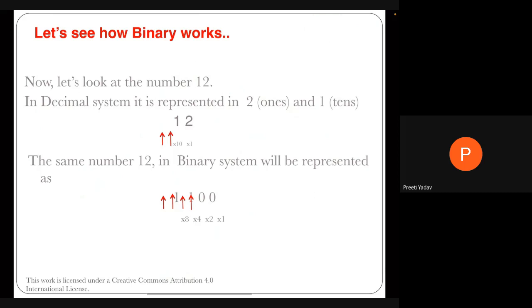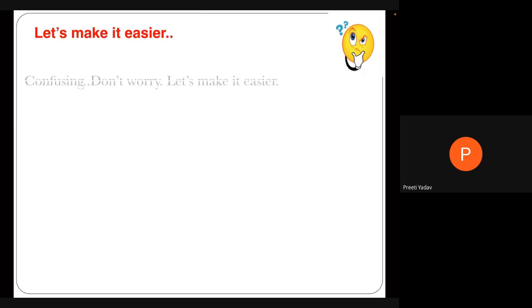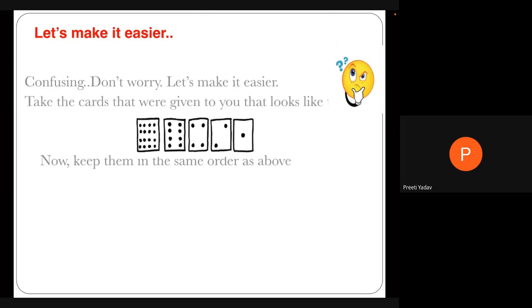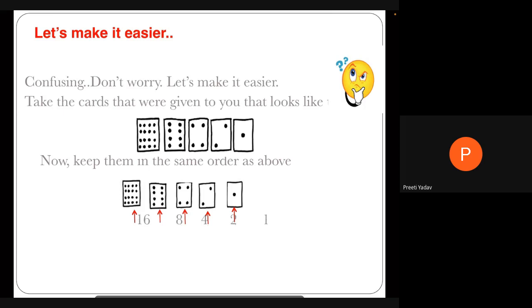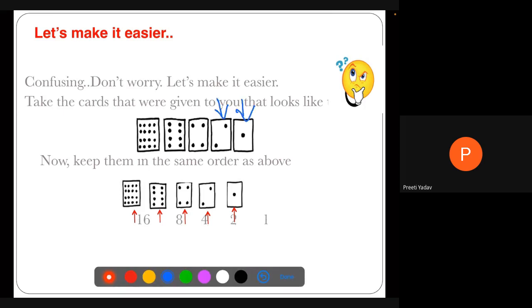We can verify: for 12 in binary (1100), we take 1×8 + 1×4 + 0×2 + 0×1 = 8 + 4 = 12. This confirms the method. Another way to understand it is to see the numbers as doubling — 1, 2, 4, 8 — and place the binary digits on top of them, then add only those corresponding to a 1.